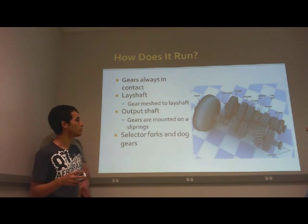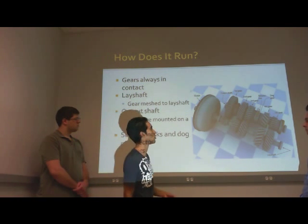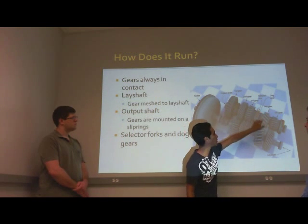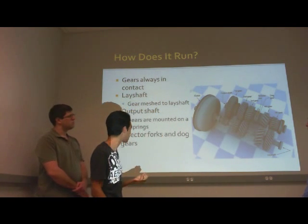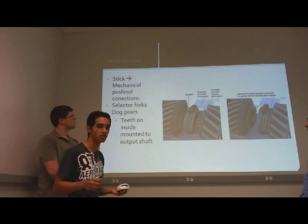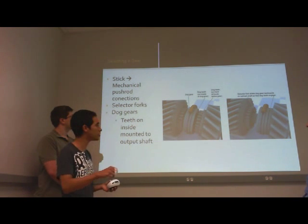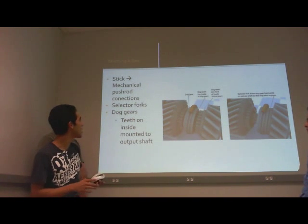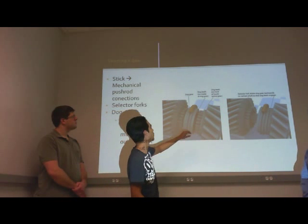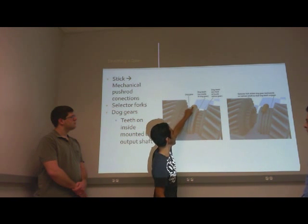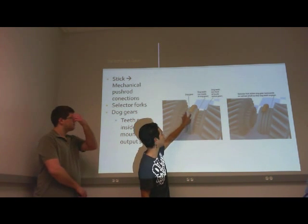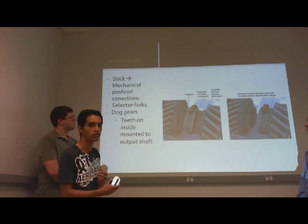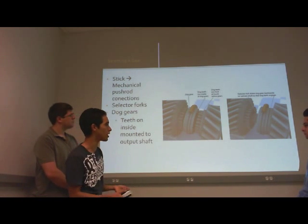The way to set a gear to be engaged is through the dog gear. In the car, to change the gear you move a stick. The stick will move several mechanical push rod connections, and those rods will move the fork gear shown in yellow. The fork gear is connected to the dog gear, which has inner teeth that mesh to the output shaft.